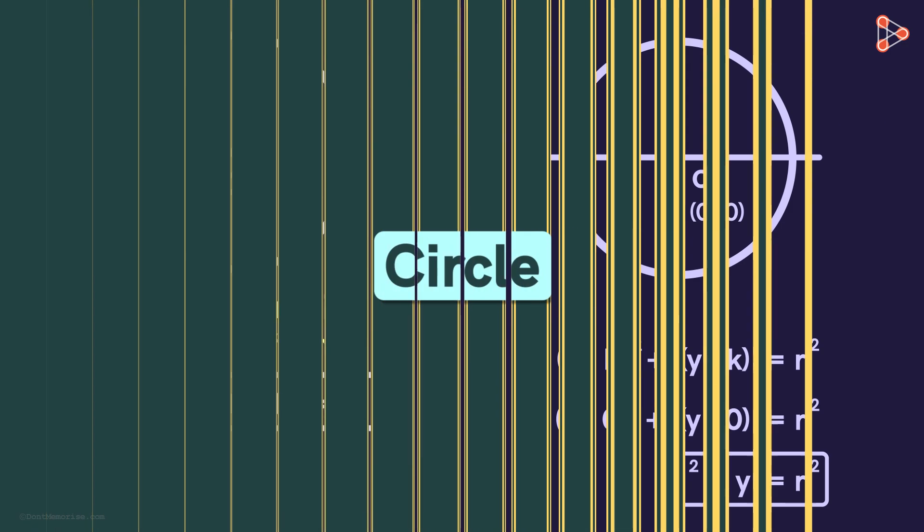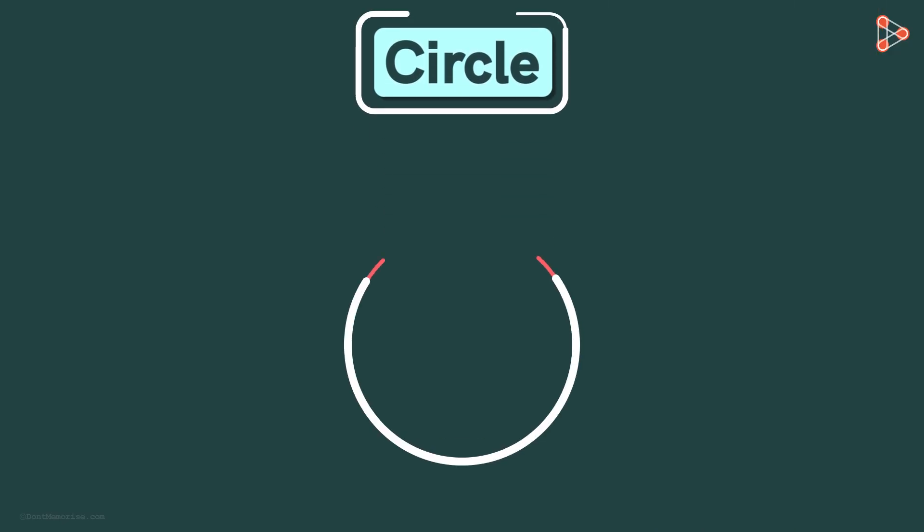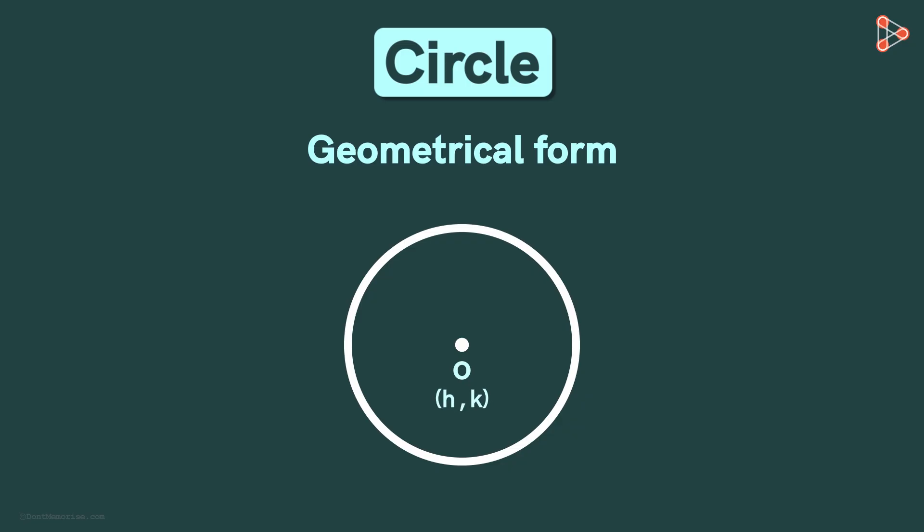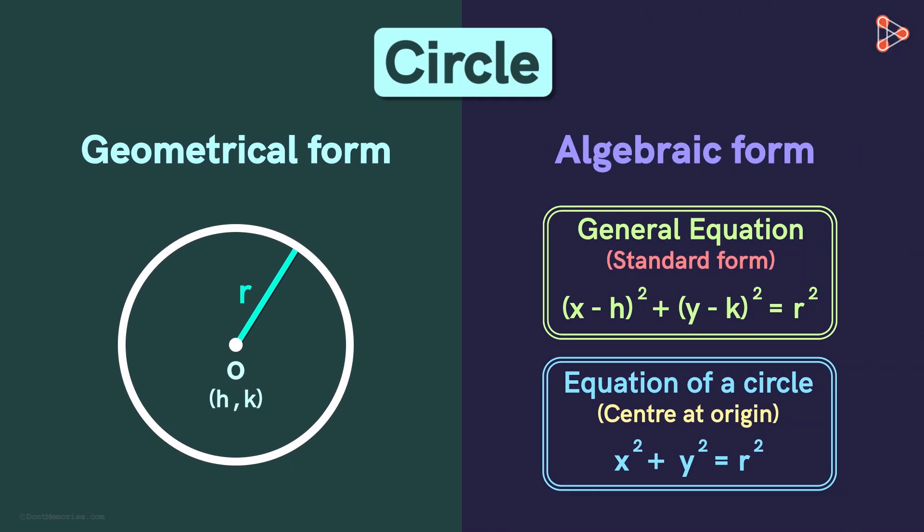So in this video, we saw how to represent a circle in the geometrical form. Center O with coordinates as H, K and radius R. We also saw how to represent it in the algebraic form. In the algebraic form, we saw these two equations. We will solve some examples based on it in the next video.